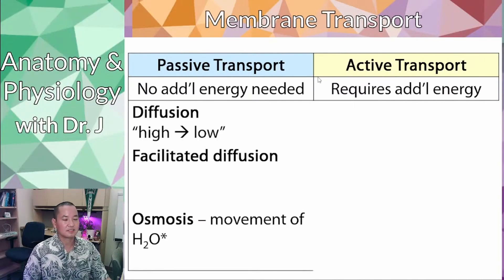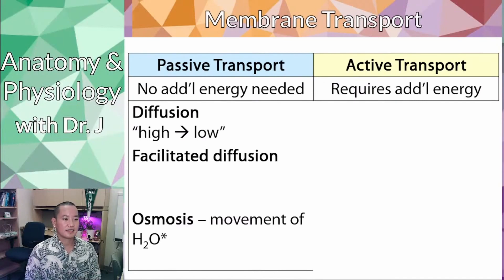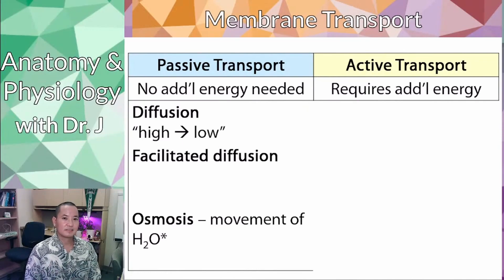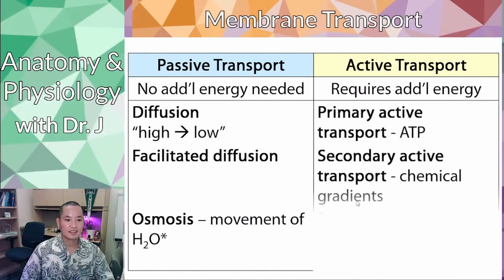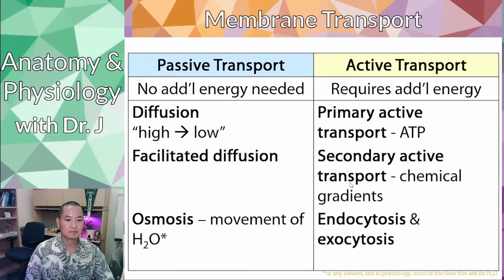The types of passive transport to know for this class are: diffusion — and I'll explain the high-to-low rule later — then facilitated diffusion, which is like a subtype of diffusion, and osmosis, which involves the movement of water.